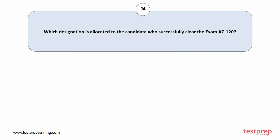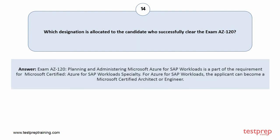Question number fourteen: Which designation is allocated to the candidate who successfully clears exam AZ-120? Exam AZ-120, planning and administering Microsoft Azure for SAP workloads, is a part of the requirement for Microsoft Certified: Azure for SAP Workloads Specialty. For Azure for SAP workloads, the applicant can become a Microsoft Certified architect or engineer.